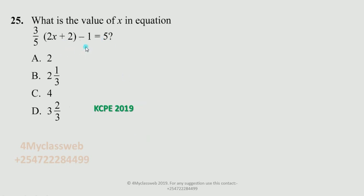This question was about solving an equation with an unknown value x. The question asks: what is the value of x? In other words, calculate the value of x that makes this equation true — what you put in for x should give us the value of 5. The expression has a bracket containing 2x plus 2, with a common factor of 3 over 5 outside the bracket, and a whole number minus 1.